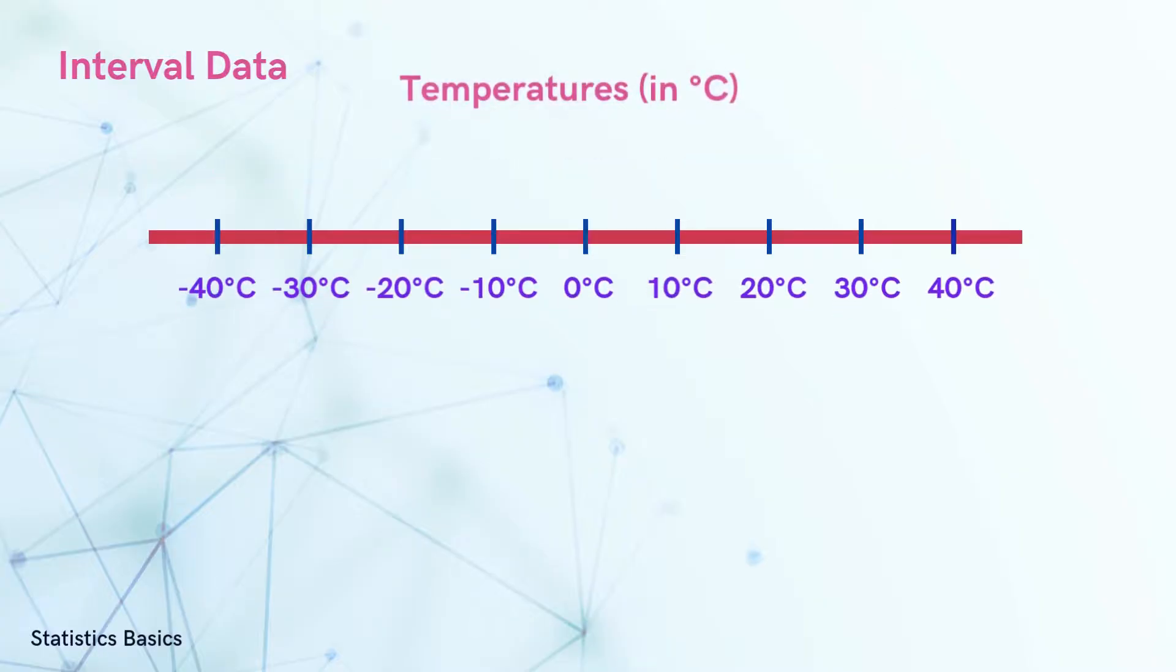A common example of interval data is temperature. The difference between 10 degrees Celsius and 20 degrees Celsius is the same as the difference between 20 degrees Celsius and 30 degrees Celsius.